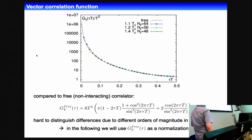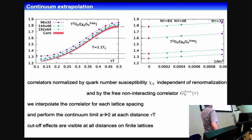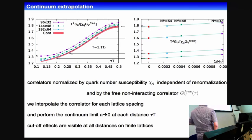The result for three different lattices at 1.1 Tc: at fixed distances we perform the continuum extrapolation, extrapolating N_t to infinity or 1 over N_t squared to zero. We then get the continuum extrapolated correlation function, shown as a band in the figure. It is very similar to the finest lattices at large separations, but it's obvious that especially for small separations you really need to perform this continuum extrapolation.